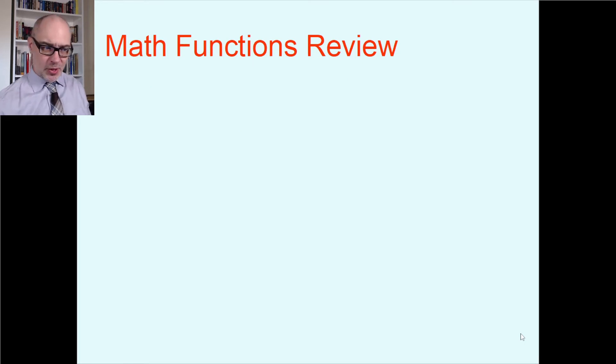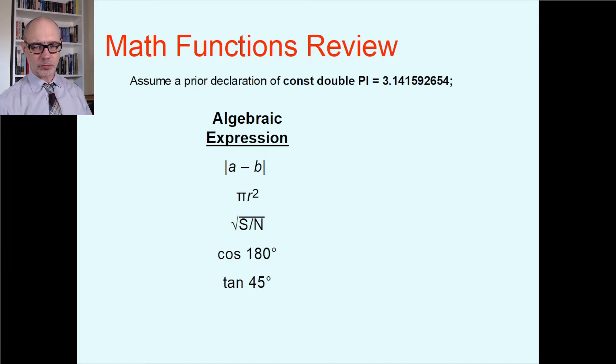So here's a little bit of review. I'm just going to quiz you about that. Let's assume for the little bit of code you're about to see that there's been a prior declaration, a constant double called PI in all uppercase because it's a constant that's been set to 3.141592654. So here's some algebraic expressions like you would see in math, and we're going to think about how would you have to write this as a C++ function call? Well, in that first one, of course, those bars indicate absolute value.